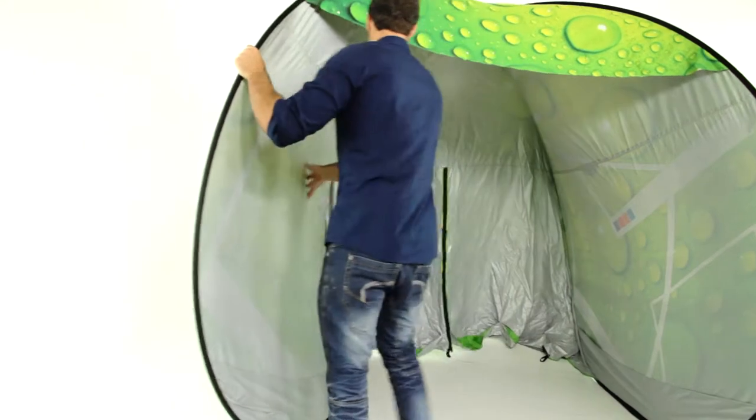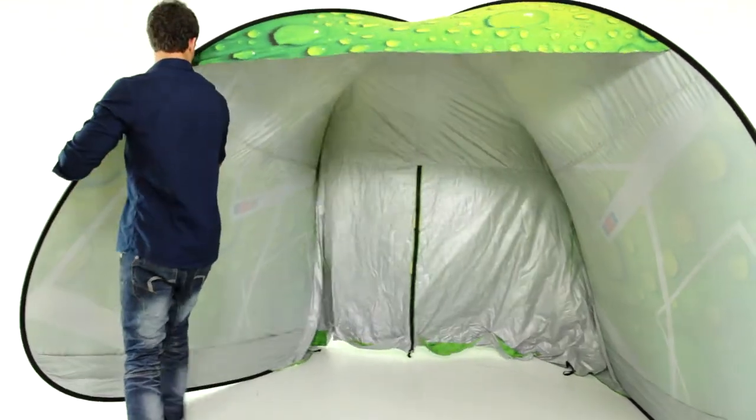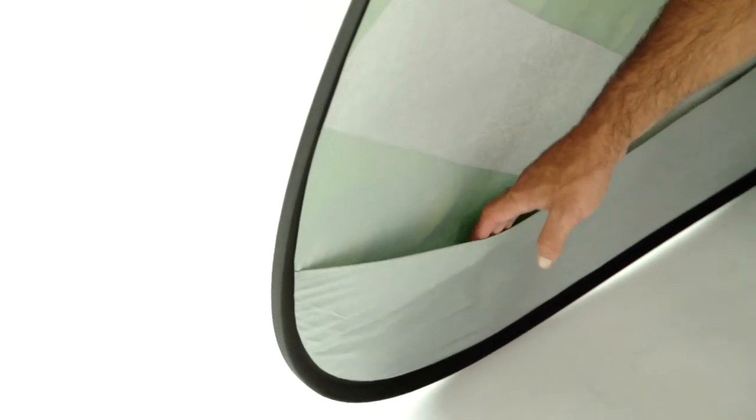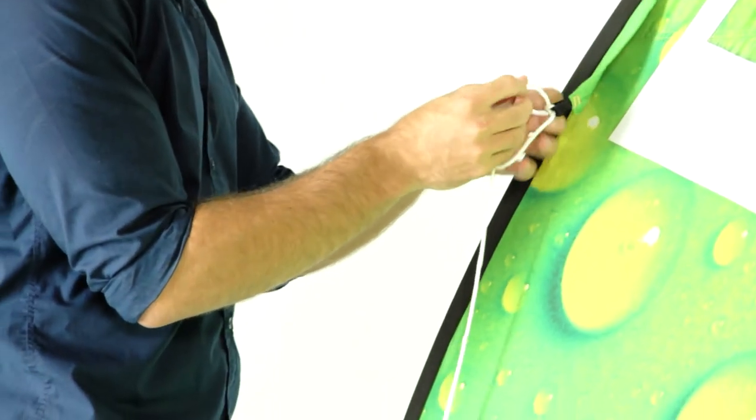Pull the sides open until the zip is in the center and the fabric is taut. On each side, tie the guy ropes through the loops and peg them to the ground with the pegs provided.